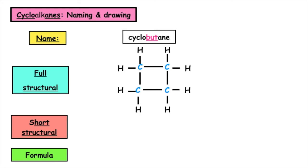To write the shortened structural formula, we take each of the carbon atoms but we remove the bonds. Each carbon only contains two hydrogens. So the shortened structural formula would be CH2CH2CH2CH2. The molecular formula then is C4H8.